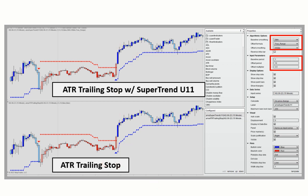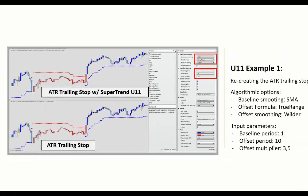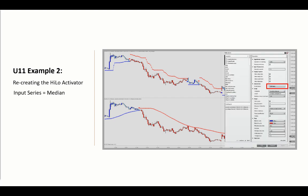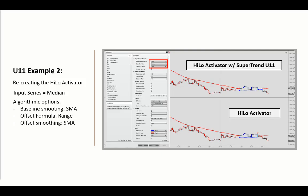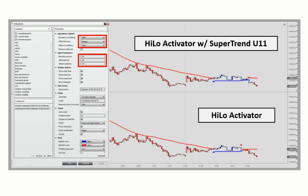You will then see the same output as for the ATR Trailing Stop, now produced with the Supertrend U11. You can also do the same with the High-Low Activator — first choose the median as input series, then in the algorithmic options set SMA for baseline smoothing, offset formula range, and offset smoothing SMA. Input parameters match the original High-Low Activator: baseline smoothing set to 50, offset period 50, and offset multiplier 0.5.